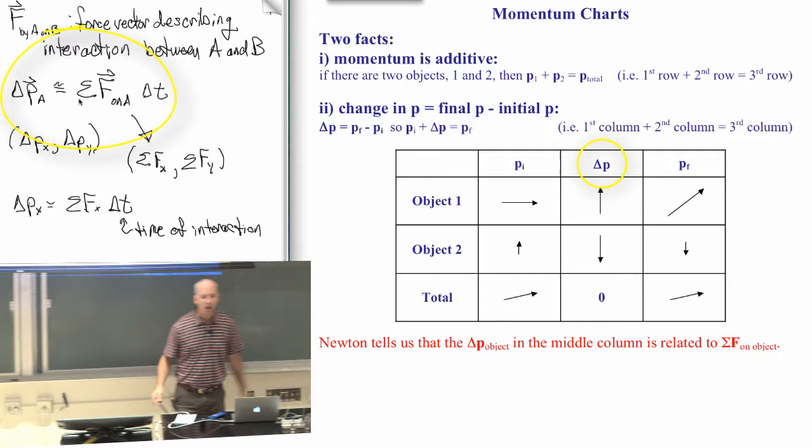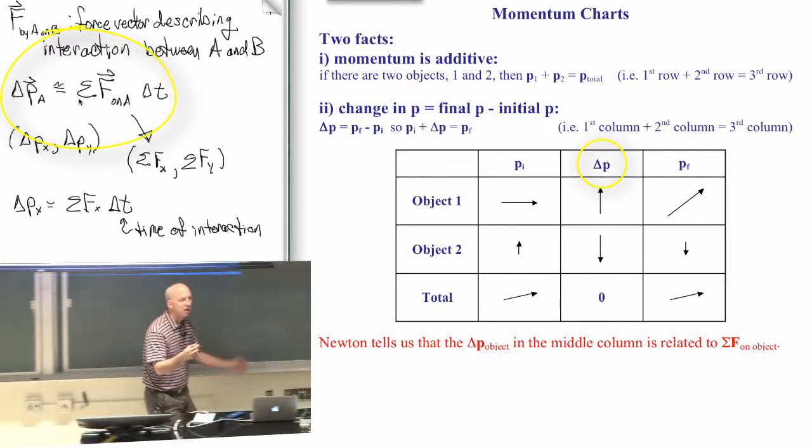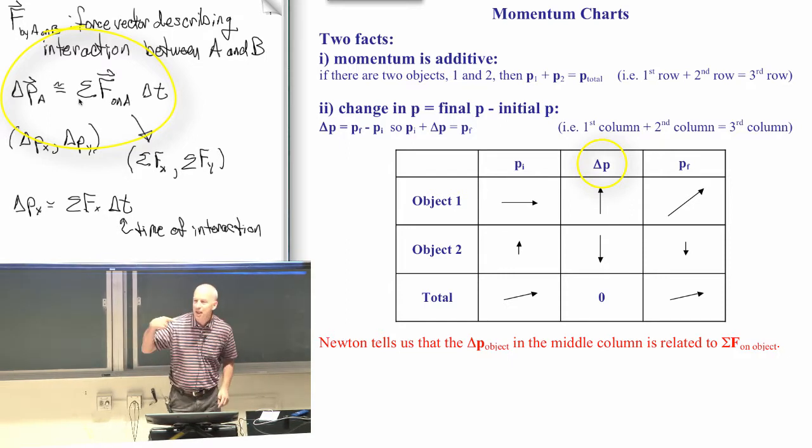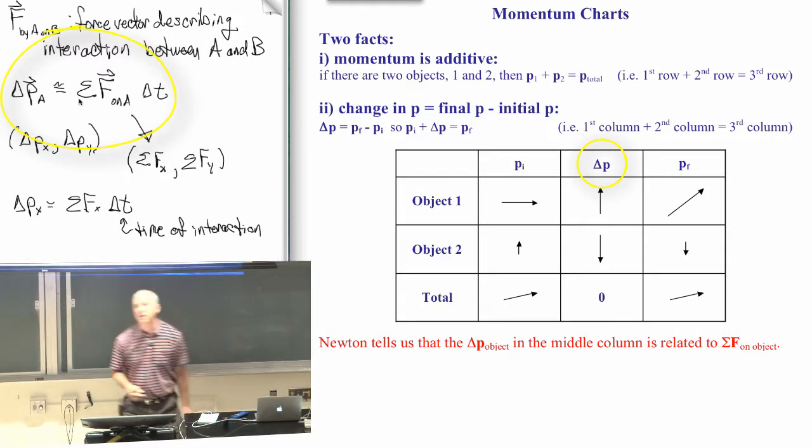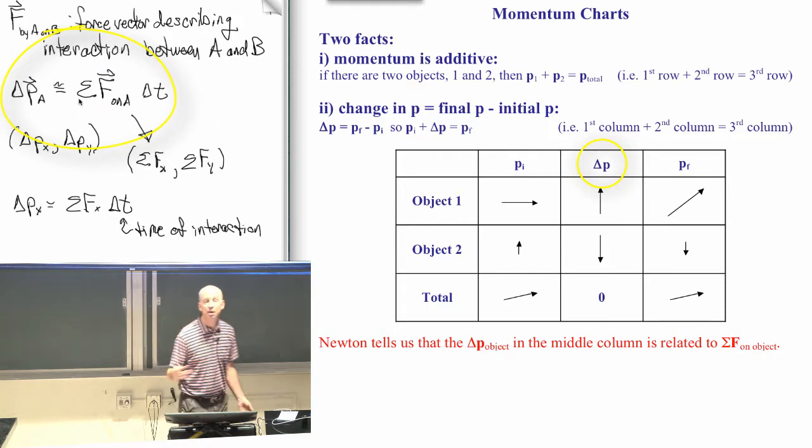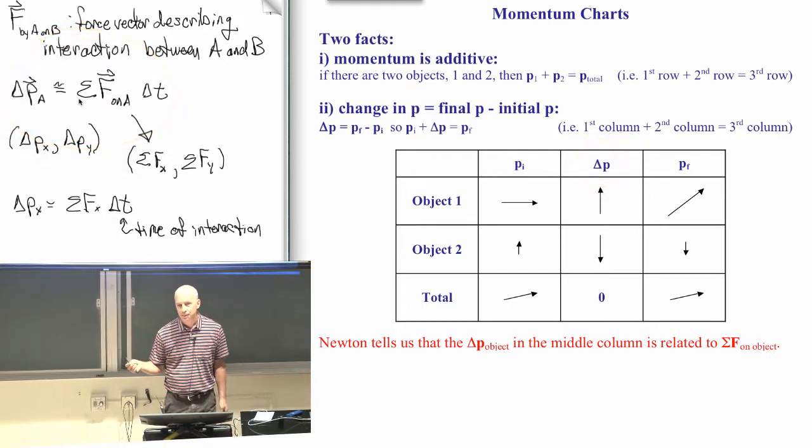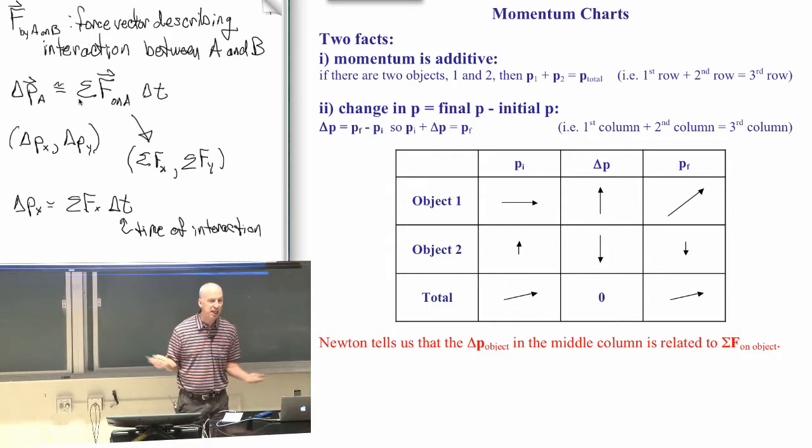If you want to know the force on me when I turned around and started walking the other way, worry about how much my momentum changed, and the time. How fast did it take me to turn around? How much time did it take me to turn around? Those two things together will tell you how much force it took to turn me around, and that force had to come from something. Some object outside of me interacted with me and caused me to turn around.